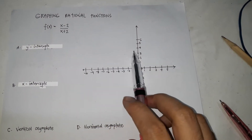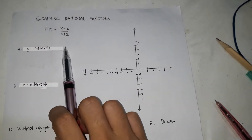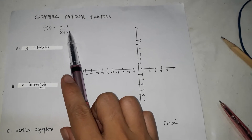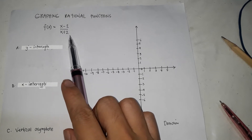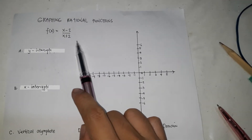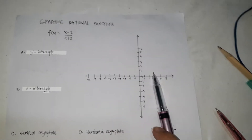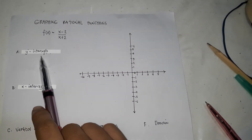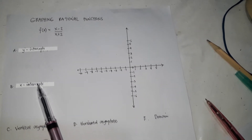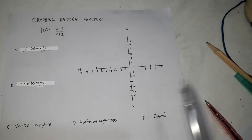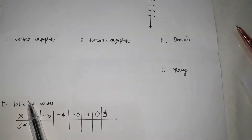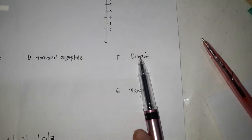Graphing rational functions. We have f of x equals x minus 2 over x plus 2 as our given function. We're going to graph that. First, we're going to identify the y-intercept, the x-intercept, the vertical asymptote, the horizontal asymptote, table of values, domain, and range.